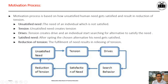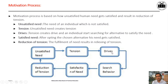The process of motivation is explained in terms of different parameters: unsatisfied needs, tensions, drives, satisfied needs, and reduction of tension. When unsatisfied needs of human beings are present in the organization, it creates tension, and when tension is created, that person or human being starts searching for different alternatives.